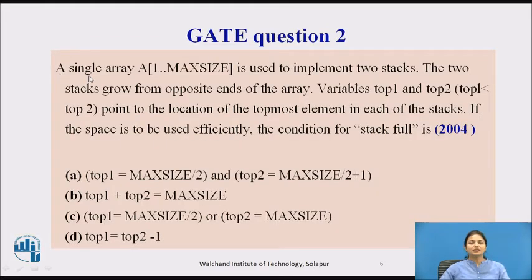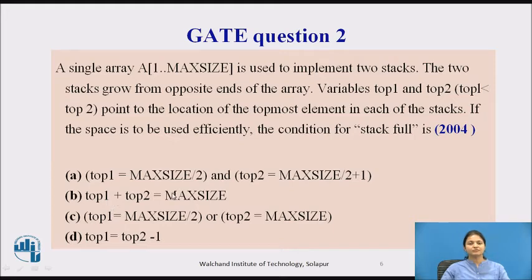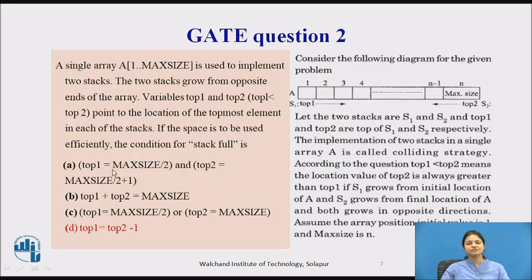The next question: a single array A[1 to maxsize] is used to implement two stacks. The two stacks grow from opposite ends of the array, with variables top1 and top2 where top1 is less than top2, pointing to the location of the topmost element in each stack. The stack grows from index 1, 2, 3, 4 and the other grows from n, n-1 and so on.